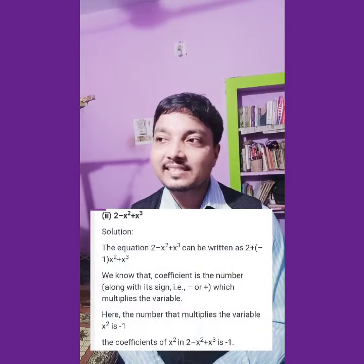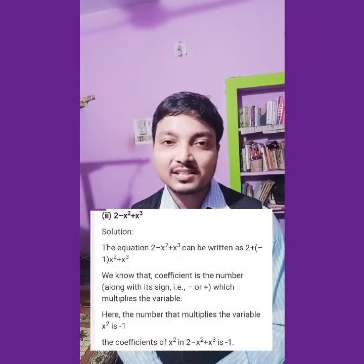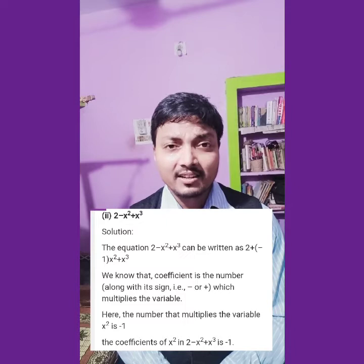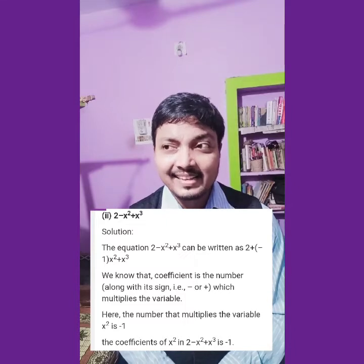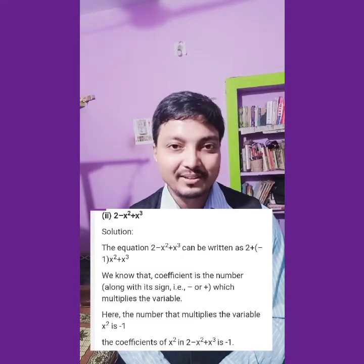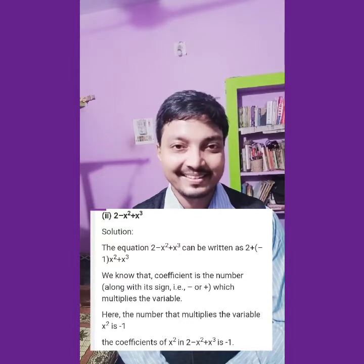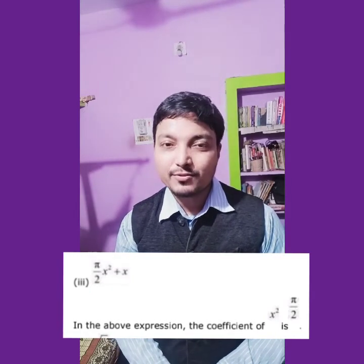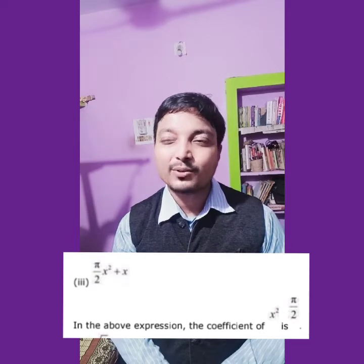The second polynomial is 2 minus x square plus x cube. There is also one term having x square, and the numeral is 1, but with its sign it is minus 1. Coefficient means the number with its sign. So the coefficient of x square here is minus 1.